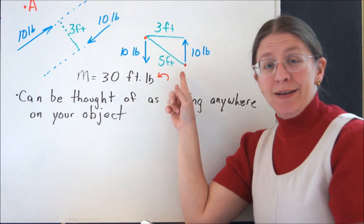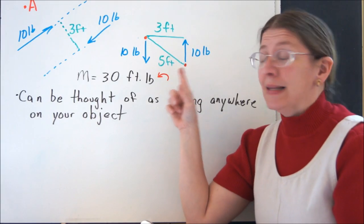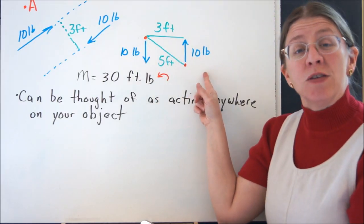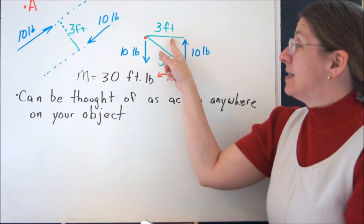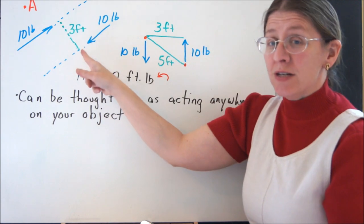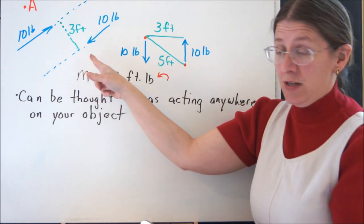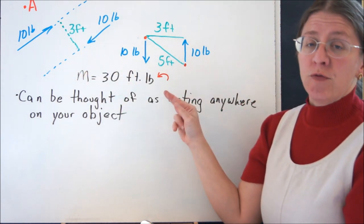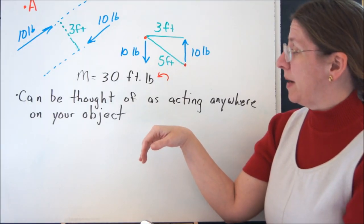And the reason I put that 5 feet there is so that I can tell you to be careful. It's not the distance between the two points of action and the force that matters. It's the perpendicular distance between the line of action of the two forces that matters. So these are both 30 foot-pounds counterclockwise, the way I drew them this time.